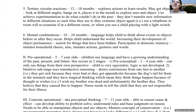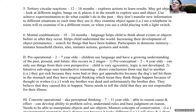Tertiary circular reactions: twelve to eighteen months — children explore actions to learn results by looking at objects from different angles, banging on them, and placing them in their mouth. They can use trial and error to accomplish new tasks. However, they do not transfer new information to different situations — so each time they see an object, they examine it again; they can play with a light switch in one room and then play with it in another as if they've never seen it before.